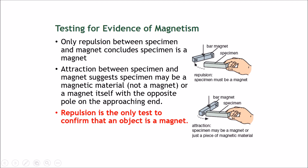However, it is also possible that this specimen may just be a piece of magnetic material. The difference is that this magnetic material has not been magnetized yet — it's not a magnet yet. This could just be a bar of iron, steel, cobalt, or nickel. Therefore the magnet is just attracted to the magnetic material, but this material does not need to be a magnet. Attraction between specimen and magnet suggests the specimen may be a magnetic material, not necessarily a magnet. Attraction only confirms the specimen is made of a magnetic material.